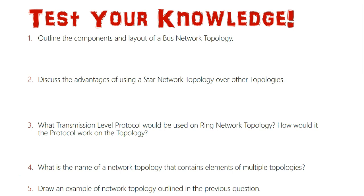Question one: outline the components and layout of a bus topology. Question two: discuss the advantages of using a star network topology over other topologies. Question three: what transmission level protocol would be used on a ring network topology, and how would the protocol be used? Question four: what is the name of the network topology that contains elements of multiple topologies? Question five: draw an example of that network topology. Pause your video here — at 50 seconds we'll start going through the answers.